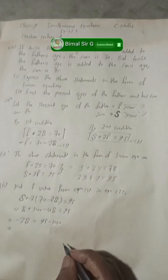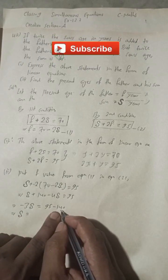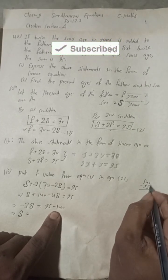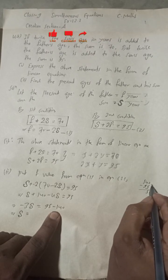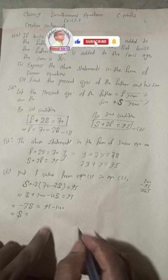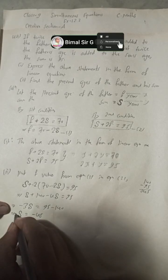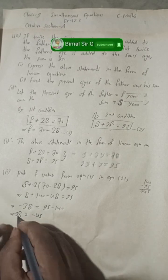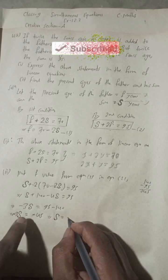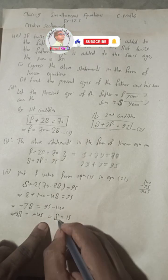Solving: −3S = −45. The negatives cancel, so S = 45 ÷ 3 = 15. We get the son's age as 15 years.